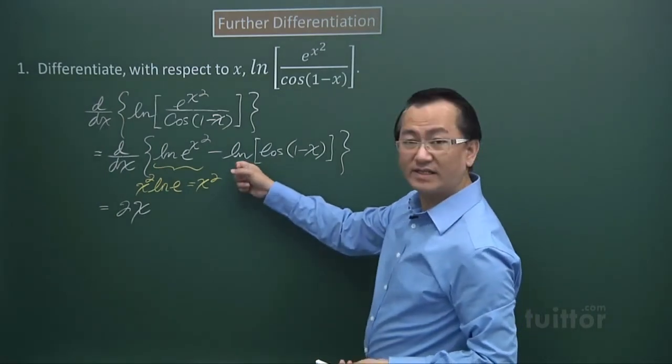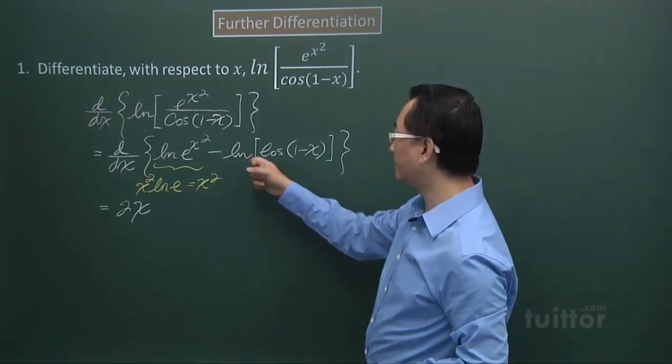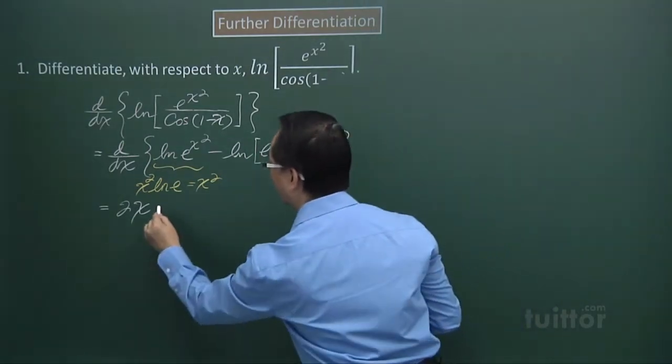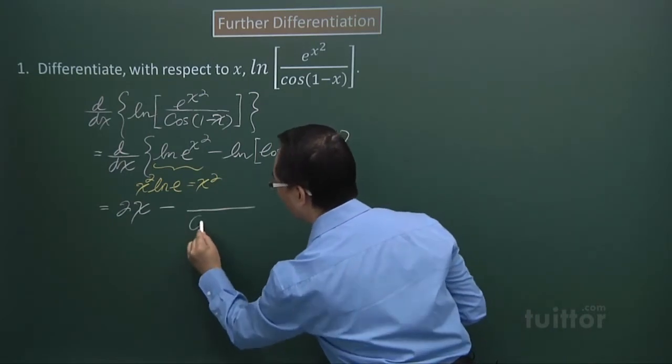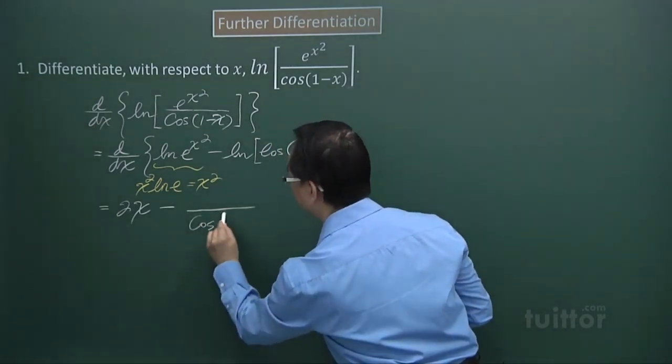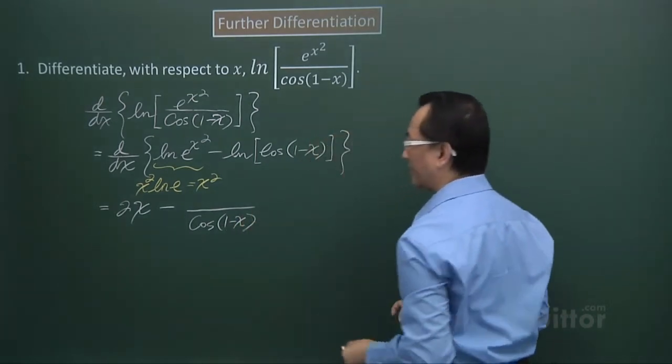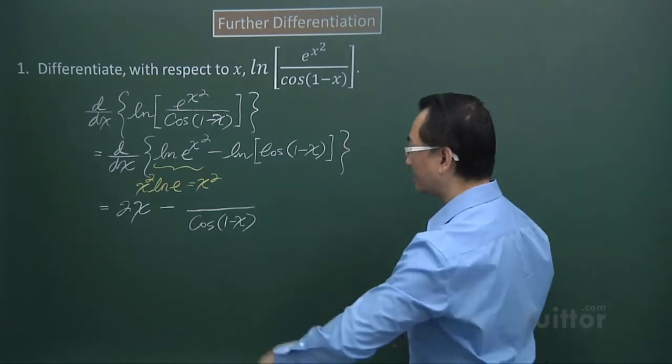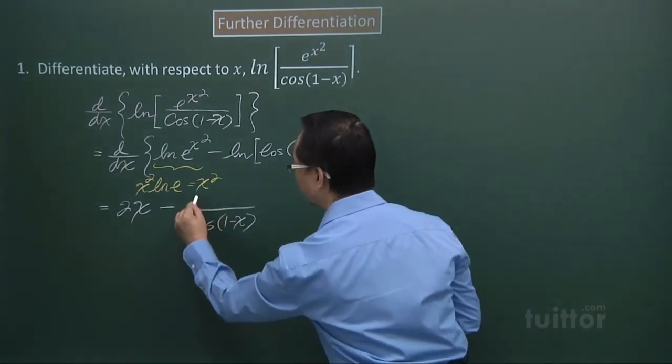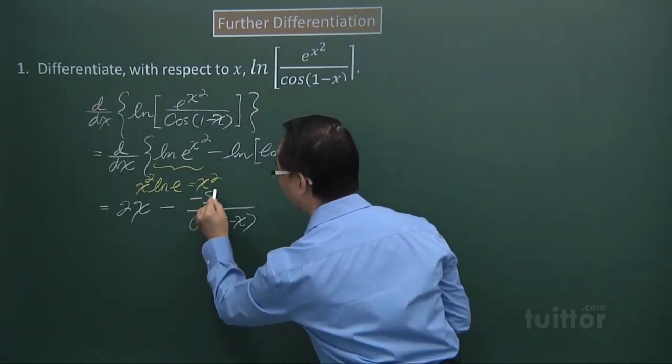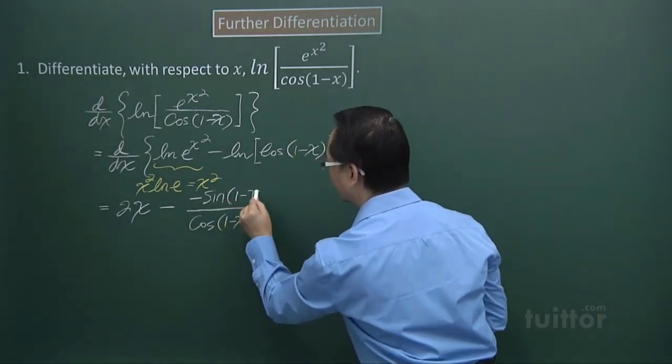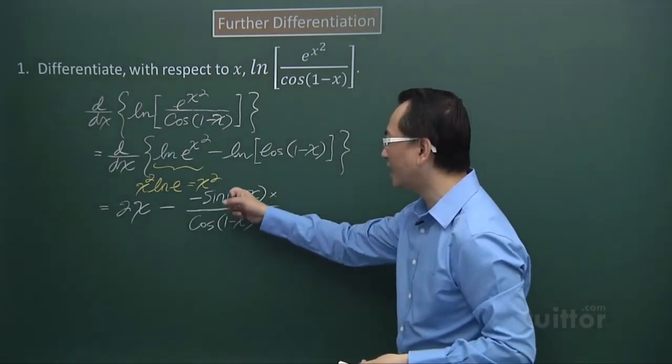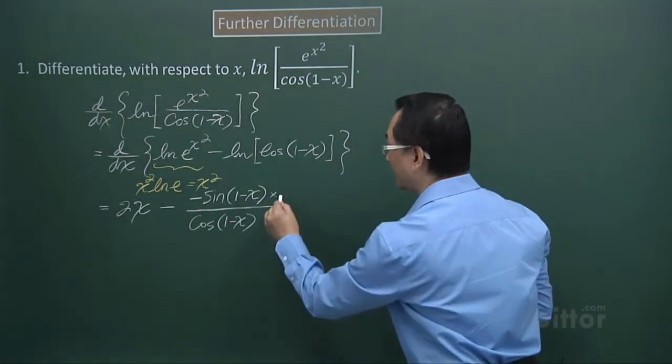Now, with respect to differentiation of the log type, the expression in the square bracket will be the expression of the denominator. When I differentiate cos, I get negative sine. Negative sine bracket 1 minus x. Then, differentiating the expression of the expression, I get negative 1.